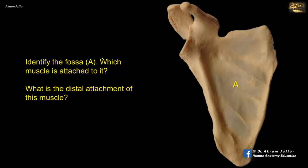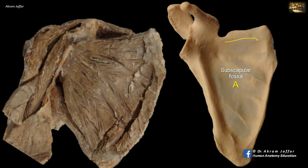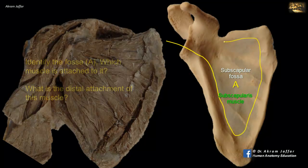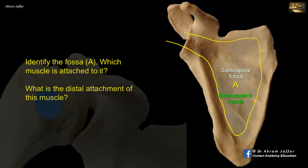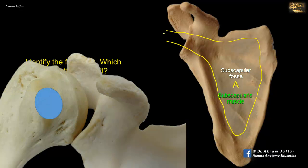Identify the fossa A, which muscle is attached to it, and what is the distal attachment of this muscle? This is the subscapular fossa, occupied by the subscapularis muscle. The muscle tapers to form a tendon that passes in front of the capsule of the shoulder joint to be attached to the front of the proximal end of the humerus — specifically, to the lesser tubercle of the humerus.